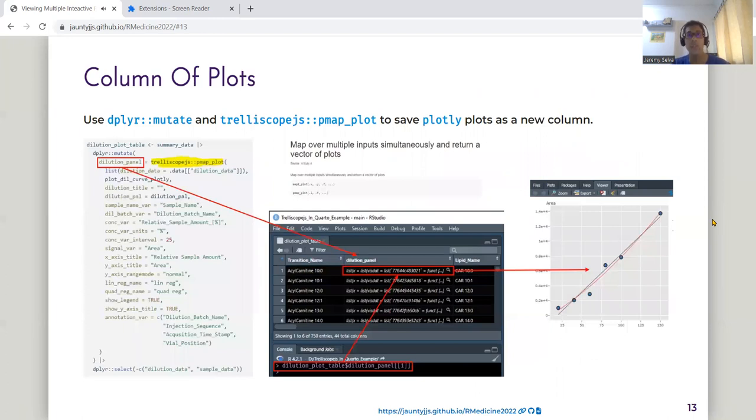This slide shows that it is possible to create a new column full of plotly plots. And this is how it is done. You first use the dplyr mutate to create this new column. And then you use the pmap_plot function from Trelliscope.js to create these plots. And then this is how I usually call the plots. For example, for the first transition, this is how the dilution plot looks like.